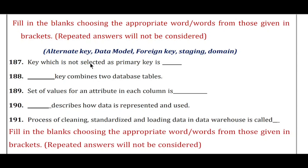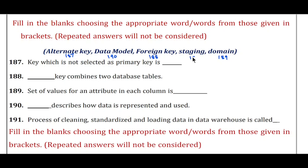Question 187: A key which is not selected as the primary key is called — the answer is alternate key. Question 188: Dash key combines two database tables — the answer is foreign key. Question 189: Set of values for an attribute in each column is called — the answer is domain. Question 190: Dash describes how data is represented and used — the answer is data model. Question 191: The process of cleaning, standardizing, and loading data into a data warehouse is called — the answer is staging (aging).